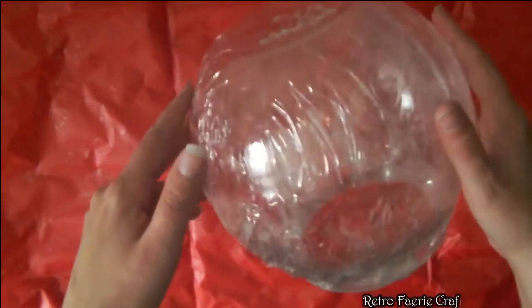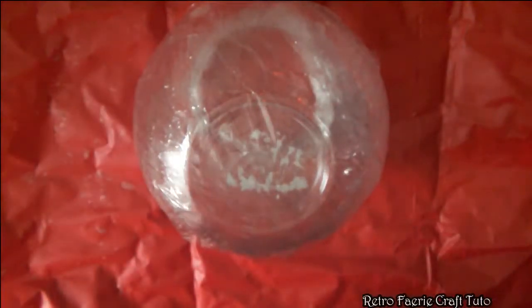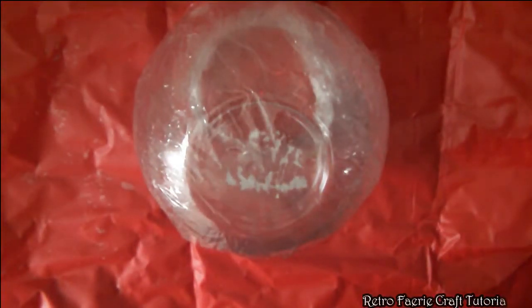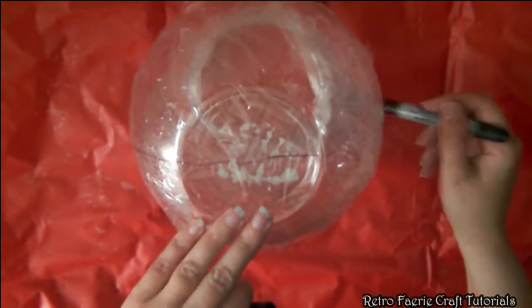For this I'm actually going to start off using a plastic bowl which is covered in cling film, and I'm just going to put a line down the middle and pretty much mark out the rough shape of a helmet.